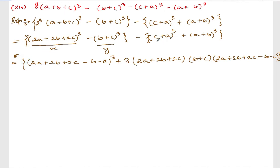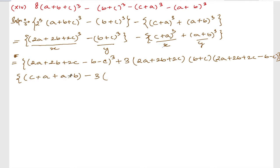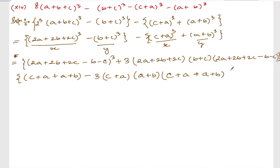For the second portion, let's take (c plus a) as x and (a plus b) as y. So put the formula for x cube minus y cube: the formula is (x minus y) whole cube minus 3xy — or rather, plus 3xy times (x plus y). That is: 3(c plus a)(a plus b), close the bracket.